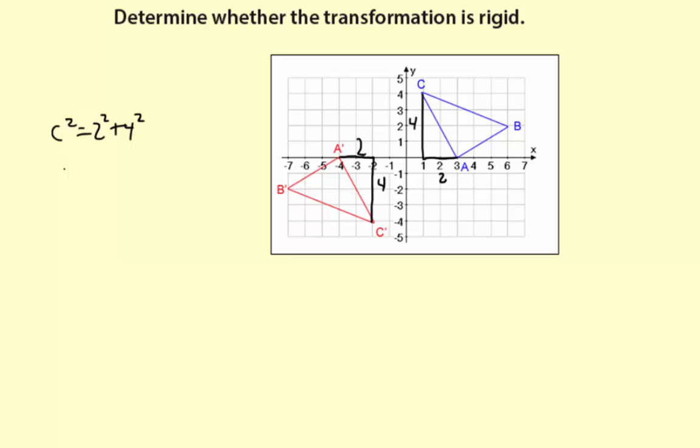And I'll go ahead and work this problem out. C squared equals four plus 16. C squared equals 20. C equals the square root of 20. And see, that applies to both triangles. So this AC and A prime C prime are both the same length of radical 20.